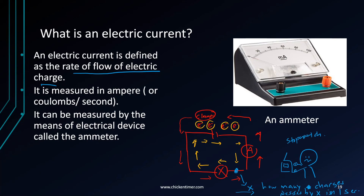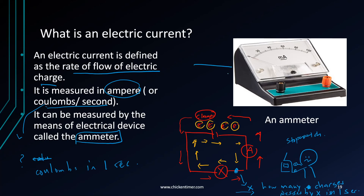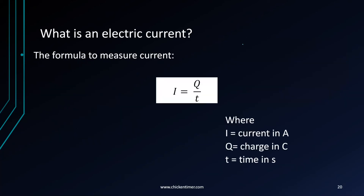Current is measured in amperes or coulombs per second — that is, how many coulombs pass by in one second. It can be measured using an ammeter. The formula for electric current is: current equals charge divided by time, or I = Q/T. To find I, cover I to get Q divided by T. To find T, cover T to get Q divided by I. To find Q, use I times T — that triangle method.